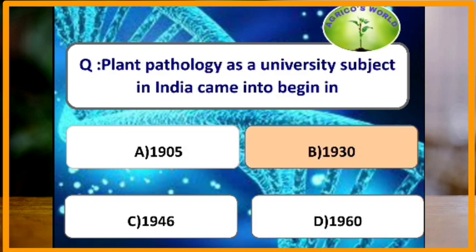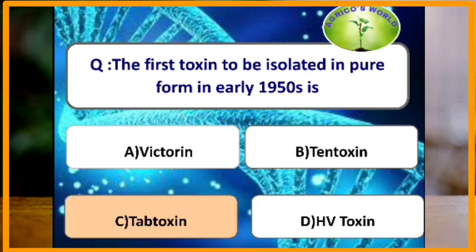Plant pathology as a university subject in India came into being in which year? In India, plant pathology was taken as a university subject from the year 1930. The first toxin to be isolated in pure form is tabtoxin — it is a non-selective toxin from Pseudomonas tabaci.